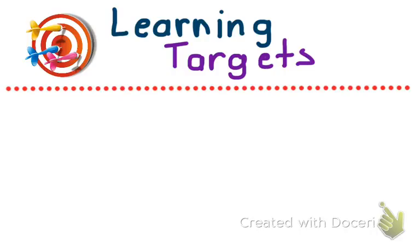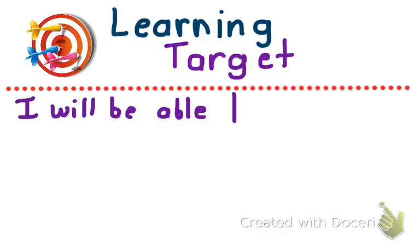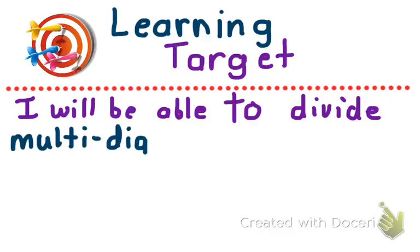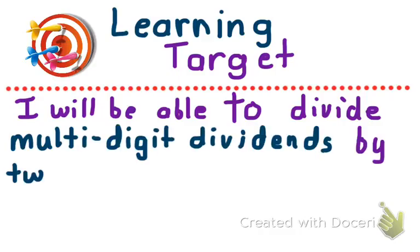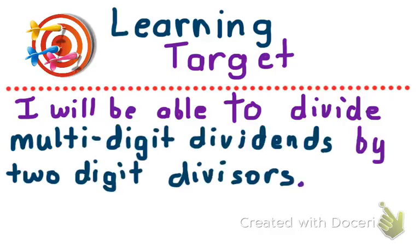Or, shall I say, learning target. There we go. I, or we, will be able to divide multi-digit dividends by two-digit divisors. That's basically the gist of our learning target. So, let's go ahead and annotate that real quick.